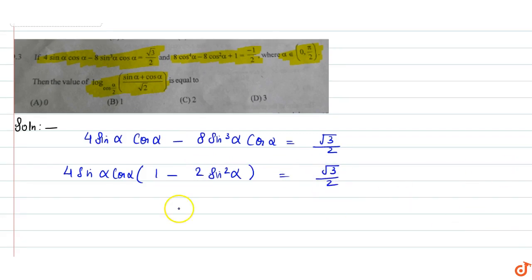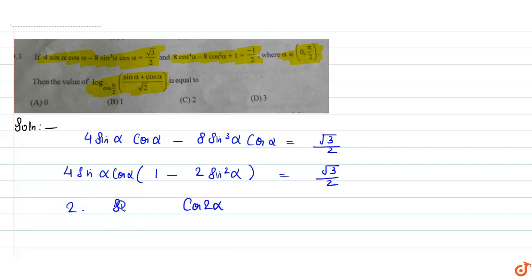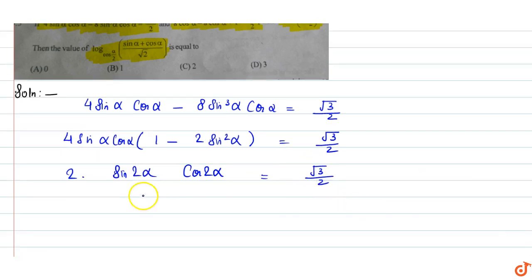तो यहां से value हो जाएगी: cos2α और 2 sin α cosα = sin2α, is equal to √3/2. तो 2 sinα cosα से sin2a होता है, तो sin4α की value हो जाएगी √3/2.